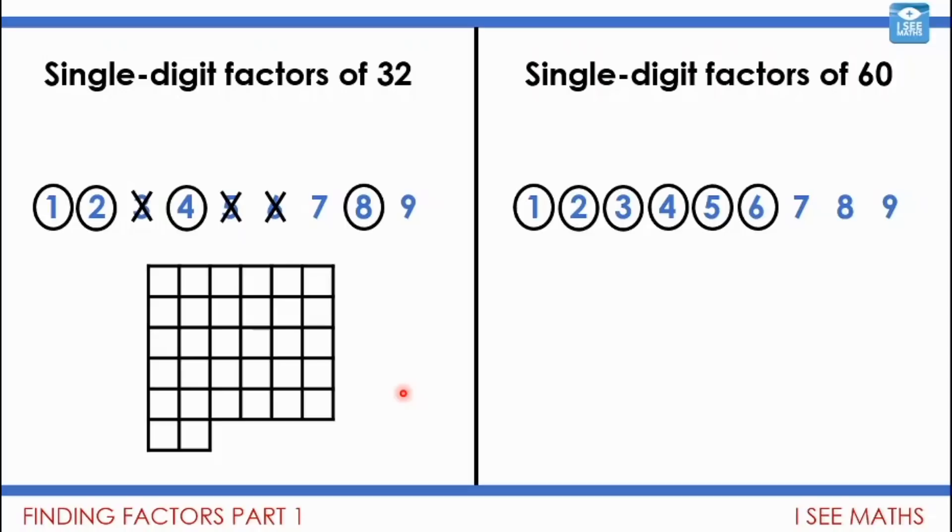Let's have a look at 6. Is it a factor of 32? If I count up in 6, 5 lots of 6 is 30. And then 2 more. So this one isn't. But, of course, 10 lots of 6 is 60. So this one is. So look. 1 to 6, all factors of 60.